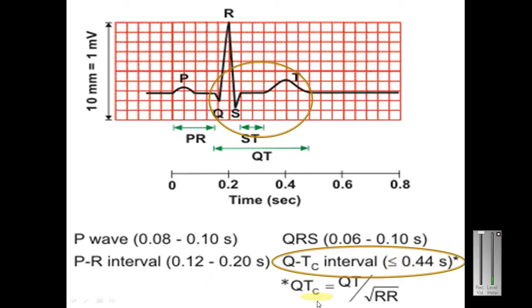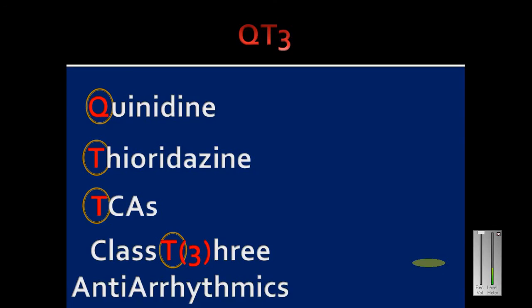Normal QT interval is less than 0.44 seconds, but you have to see the corrected QT interval because QT interval is inversely proportional to the heart rate. So as heart rate increases, QT interval lowers normally. You have to see the normal corrected range and compare. More than 0.44 seconds means the QT interval is prolonged and it is not a good thing.